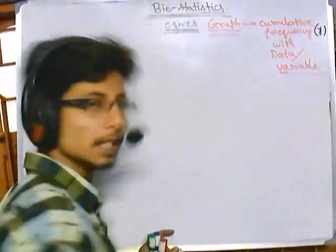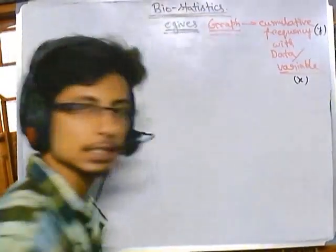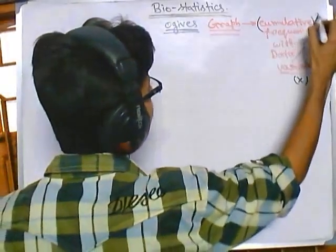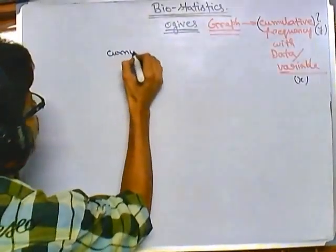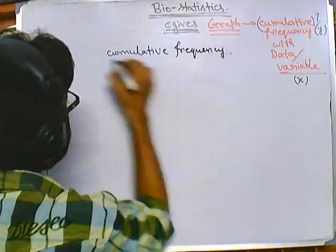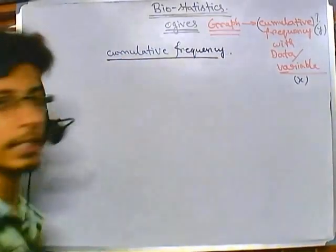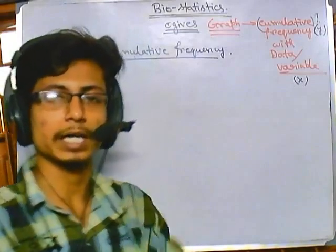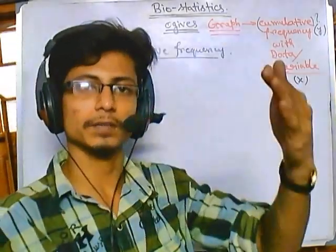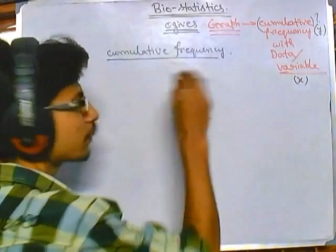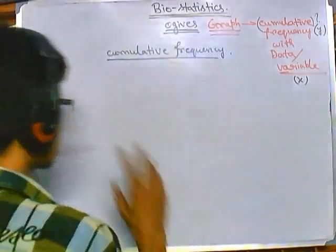In an ogive, we put cumulative frequencies on the y-axis and the data or variable on the x-axis. Now, what is cumulative frequency? Cumulative frequency gives us the idea about how many data points are placed before a value and how many are after it — it is different from a normal frequency.